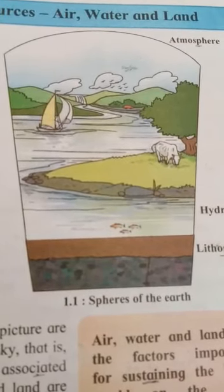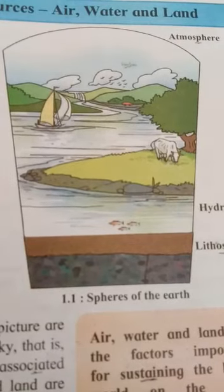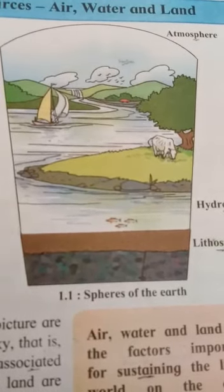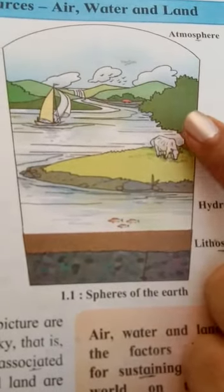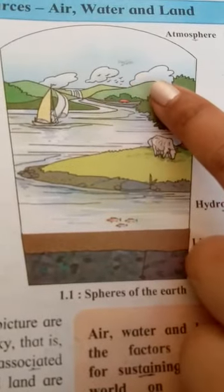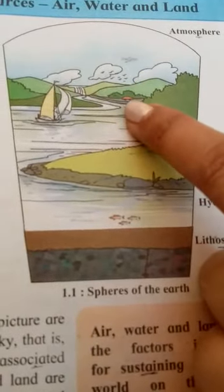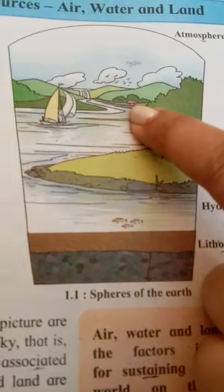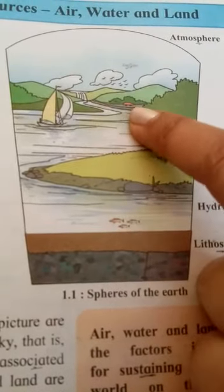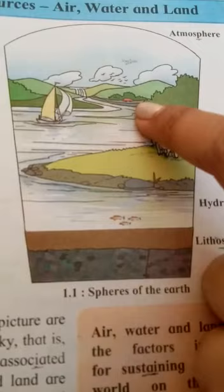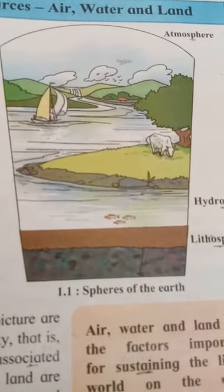Next question: locate the trees and the road. See, the trees are here, and here also there are some trees. And this is a road — you can see this is a car on the road.